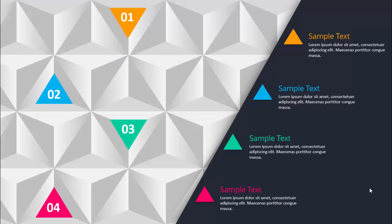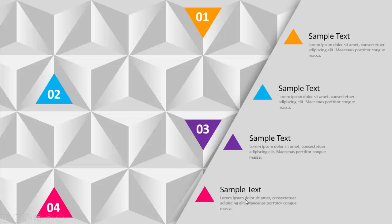In today's tutorial I'm going to show you how to make four options 3D triangle geometric slide in PowerPoint. As you can see, I've created these 3D triangles and put the options here — one, two, three, and four — with different colors. On the right side you can add the detailed text. I have also created one more slide where I've just changed the background color.